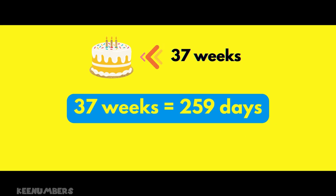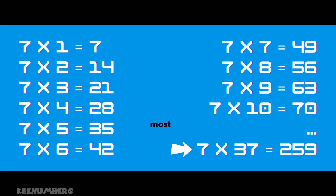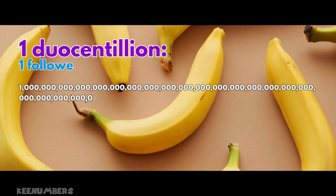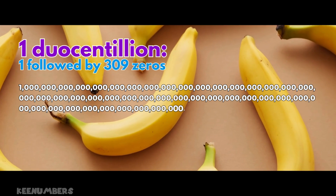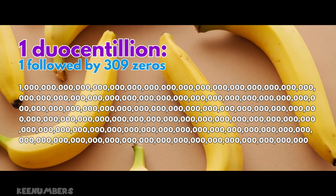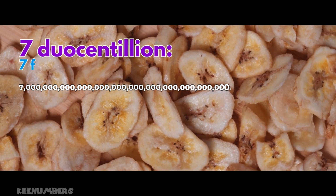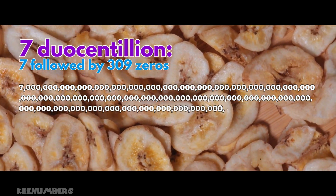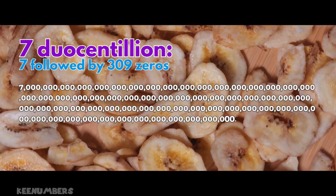Do you need to commit this multiplication to memory or include it in your seven times table? No. Finally, if you have seven duocentillion bananas, is that enough bananas to cover the whole earth? You bet — we'll all be swimming in bananas!